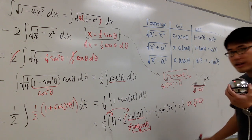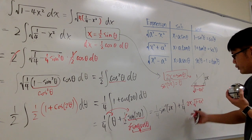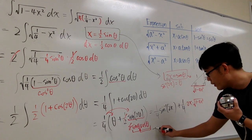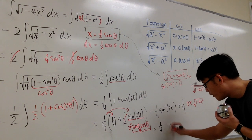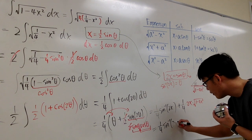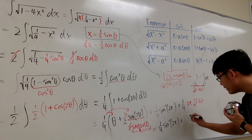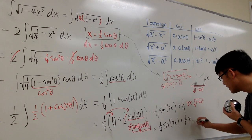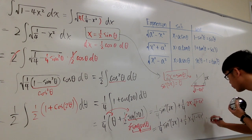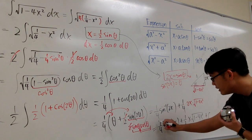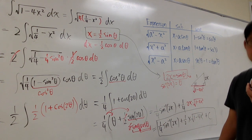We are done. The 4 and 2 reduce, giving us the final answer: (1/4) arcsin(2x) + (1/2)x√(1 − 4x²) + C.